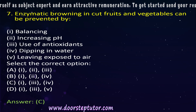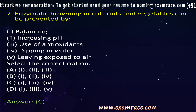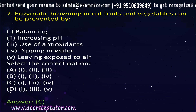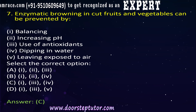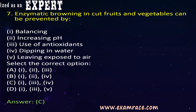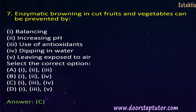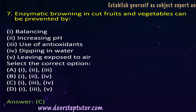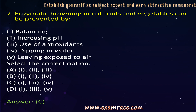The next question is related to enzymatic browning. Enzymatic browning results from the formation of brown-colored pigments, formed by the oxidation of polyphenol compounds by an enzyme called phenol oxidase, found on the surface of cut fruits and vegetables. Enzymatic browning can be prevented by using natural antioxidants like vitamin C or ascorbic acid, by dipping fruits or vegetables in water or milk, and by balancing the pH of the fruits. The correct answer is C.